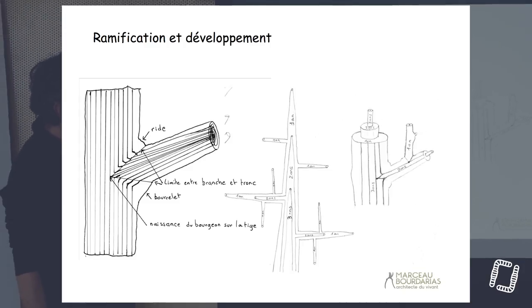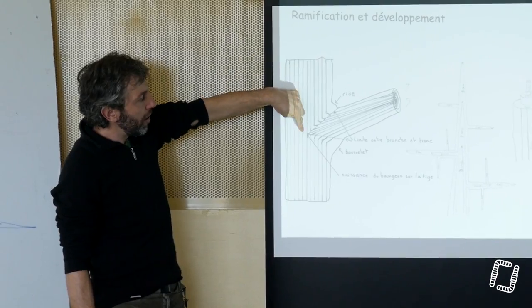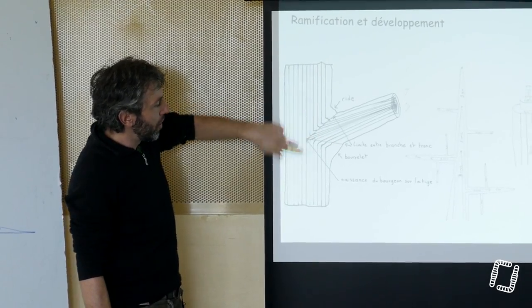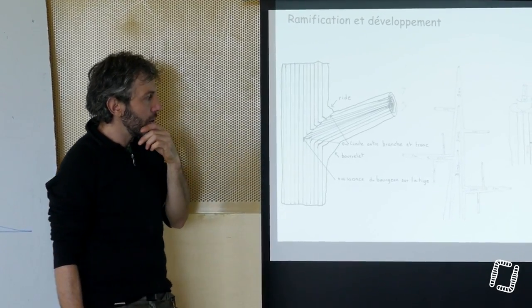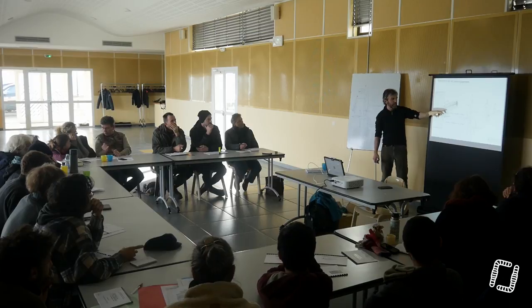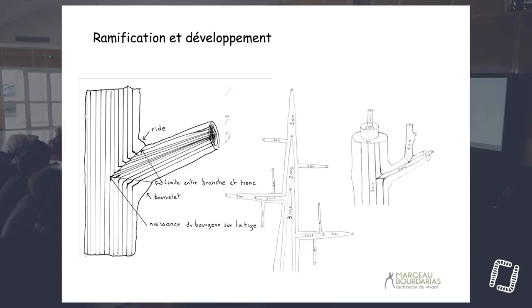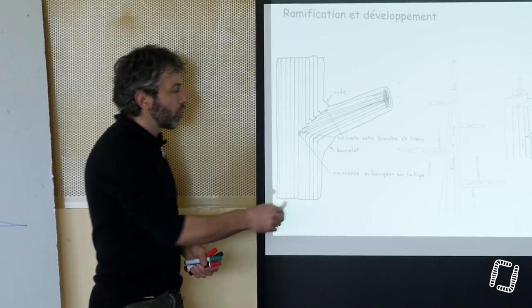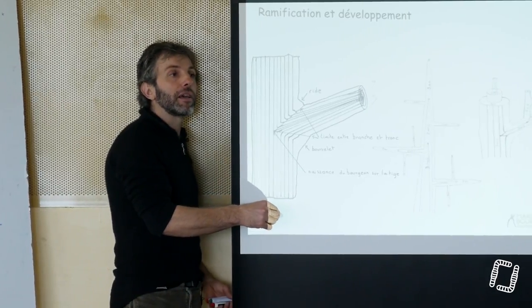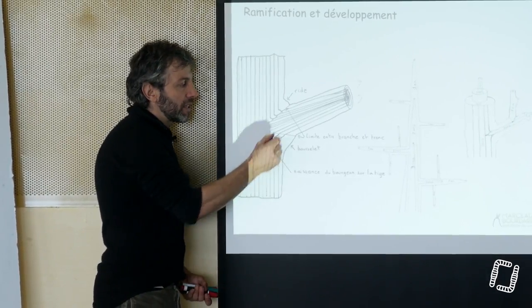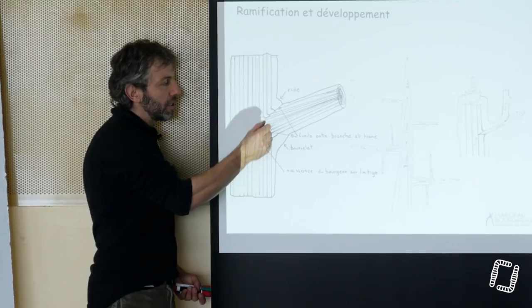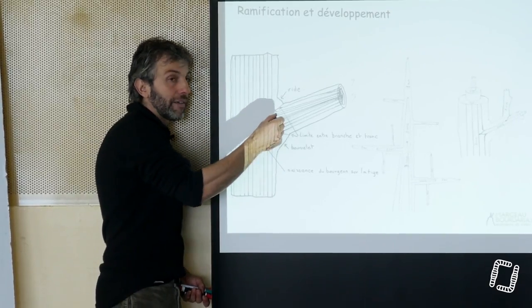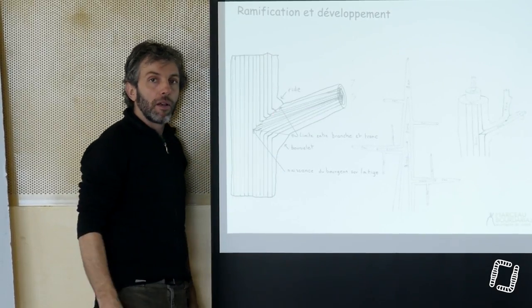De la même manière, l'insertion de la branche se fait de cette manière-là. Il y a une limite entre le bois de la branche et le bois du tronc qui est la connexion de vaisseaux entre eux. Ce ne sont pas des vaisseaux continus de là à là, au moins dans un premier temps. Ce sont des vaisseaux qui circulent verticalement et qui sont en connexion avec d'autres vaisseaux qui partent latéralement.